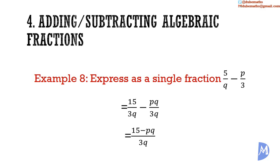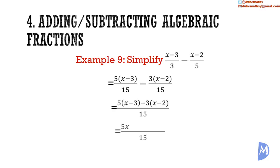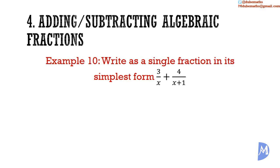Example 9. We multiply the numerator by 3 as well. We have the same denominator so we can add the numerators. Expanding brackets, we get 5x minus 15, minus 3 multiplied by x, which is negative 3x, and negative 3 multiplied by negative 2 is positive 6. Adding like terms: 5x minus 3x is equal to 2x, and negative 15 plus 6 is equal to negative 9. This fraction cannot be reduced any further.